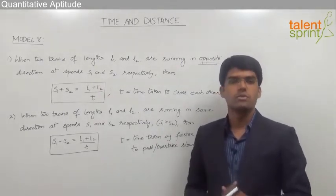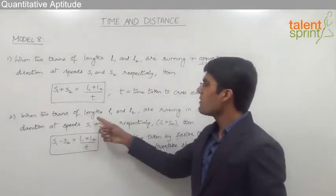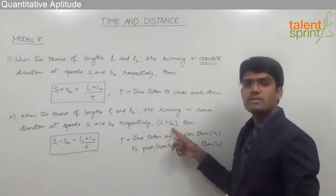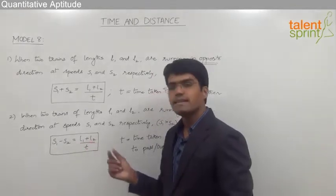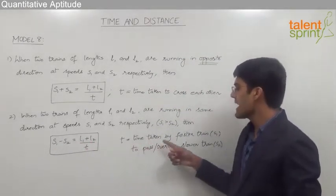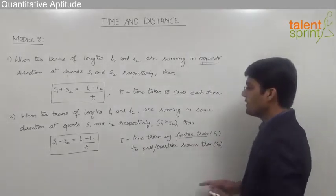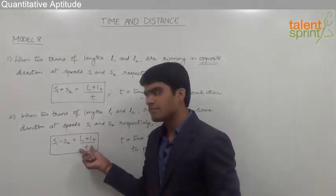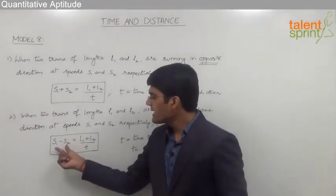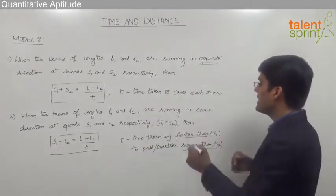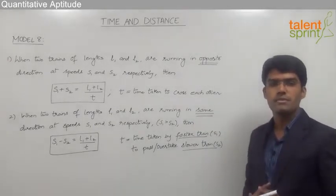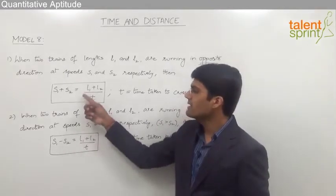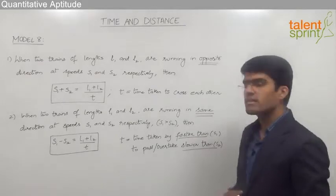Now let us understand the equation when two trains are moving in same direction. When two trains of length L1 and L2 are running in same direction at speeds S1 and S2 respectively, where S1 is greater than S2, then S1 minus S2 equals to L1 plus L2 by T, where T is the time taken by the faster train running at speed S1 to pass or overtake the slower train. This equation is also in the form of speed equals distance by time. Here S1 minus S2 is used because for same direction the relative speed is the difference of their speeds.